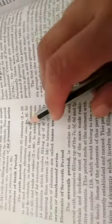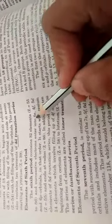Now from the 6th period, the 6th period contains 32 elements, z equal to 55 to 86. And successive electrons enter into the 6s, 4f, 5d and 6p orbital. Because all the orbitals have same value of n plus l. All of them have the same n plus l value, that's why they are in increasing order.